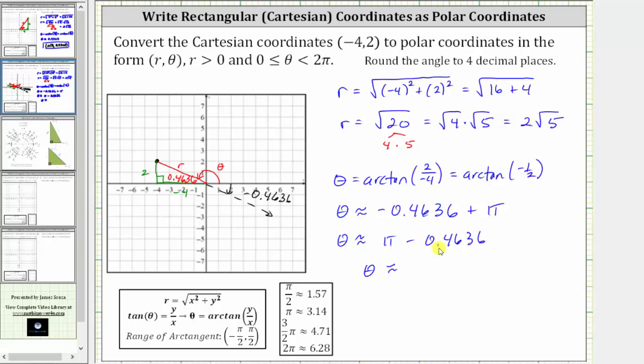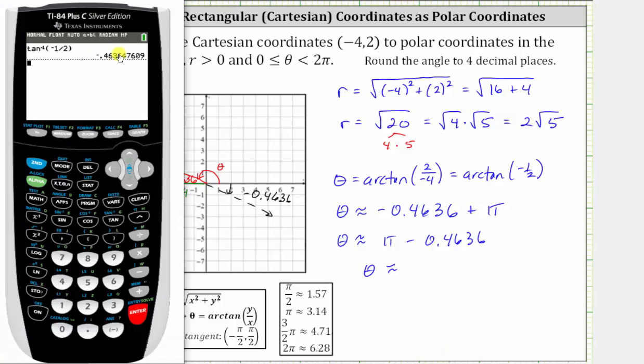So going back to the calculator, let's go and just add pi. To four decimal places, we have approximately 2.6779 radians.